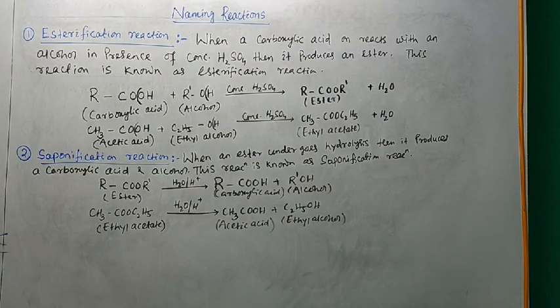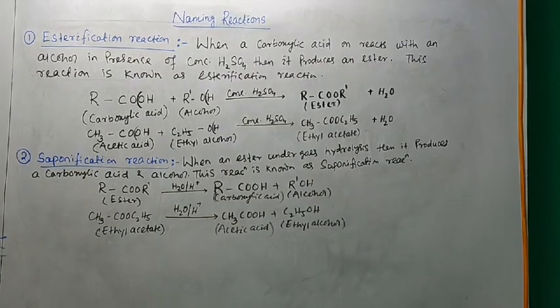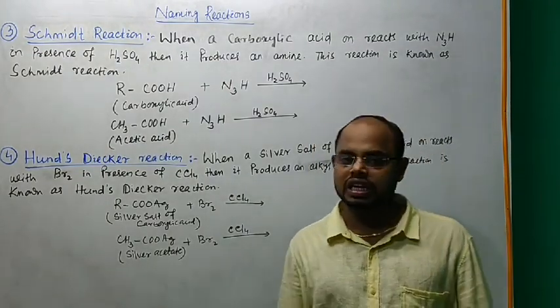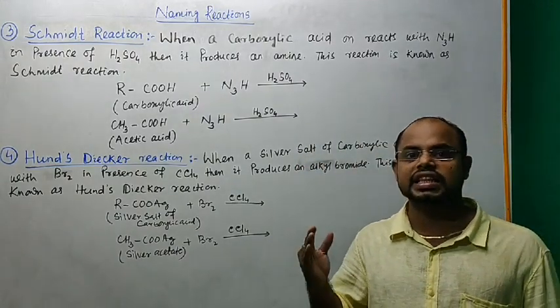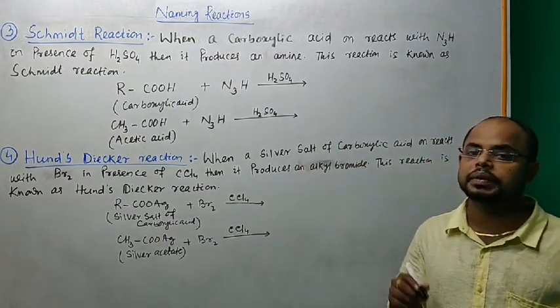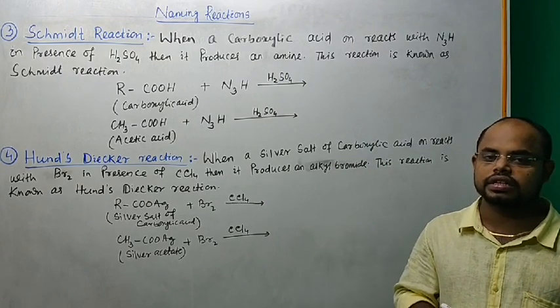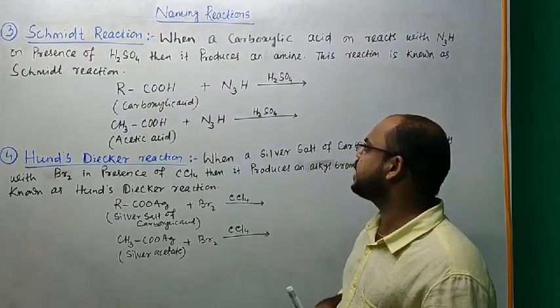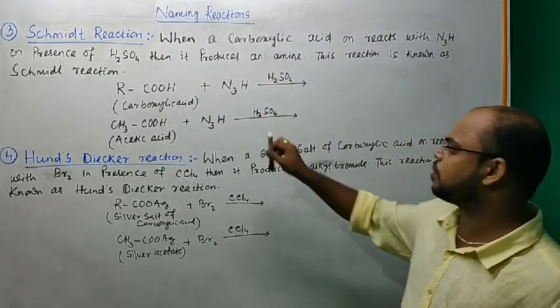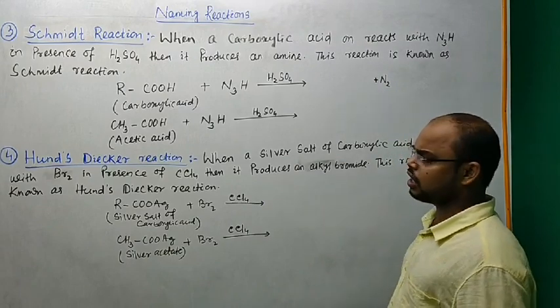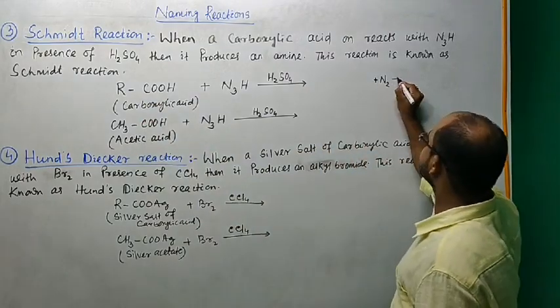Now the third reaction is Schmidt reaction. Schmidt reaction: when a carboxylic acid reacts with hydrazine, that is N2H4, in presence of H2SO4 sulfuric acid, then it produces an amine.